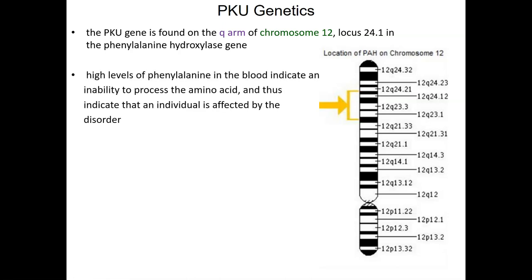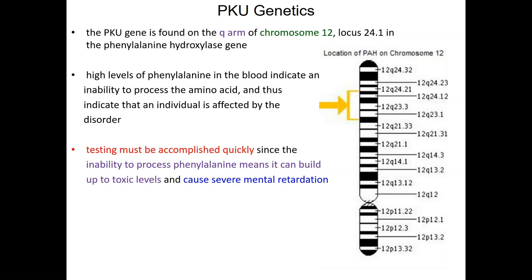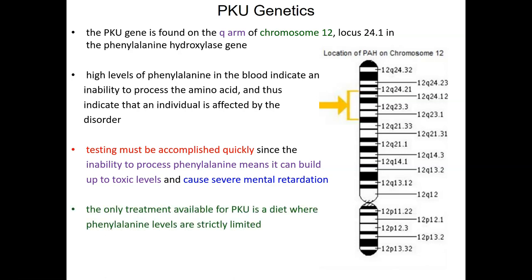The PKU gene is found on the Q arm of chromosome 12 at address 24.1, where the phenylalanine hydroxylase gene lives. High levels of phenylalanine are the first indicator of an inability to process the amino acid. For this reason, infants are tested very quickly after birth to check phenylalanine levels and test their genetics for the mutant allele. We can intervene right away and reduce phenylalanine consumption, blocking the formation of toxic levels and avoiding cognitive impact — but we need to act very quickly for the newborn baby.